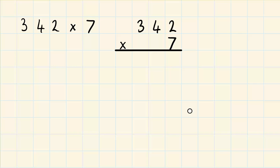Now, just as in the grid method, we have to partition our 342. And we do this down the side here. So we've got 7 times our units, so we've got 2 units. And we do 7 times the tens, so we've got 4 tens or 40. And then we've got 7 times 3 hundreds, or 300.